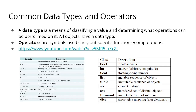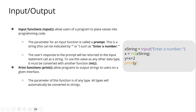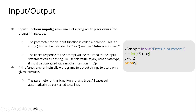Next we have input and output. The input function allows users of a program to place values into programming code. Once we call an input function, we ask the user to input from their keyboard. For example, 'enter a number'. The parameter for an input function is called a prompt — this is a string that can be indicated by double or single quotes, such as 'enter a number'.